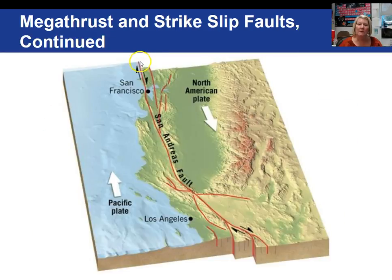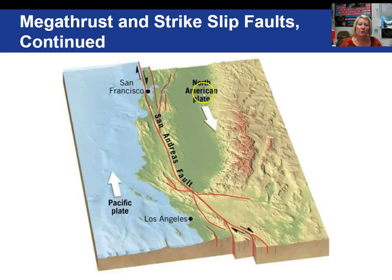As most of us are aware, the San Andreas Fault is very active. Here is a picture of it running from San Francisco all the way down to Southern California, showing the Pacific plate moving in a general northerly direction and the North American plate moving in a general southerly direction. So this is a strike-slip fault.